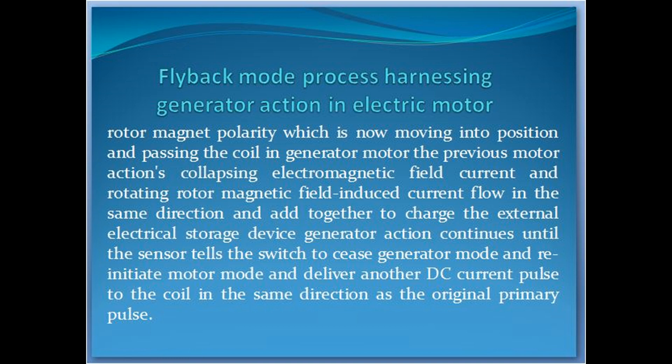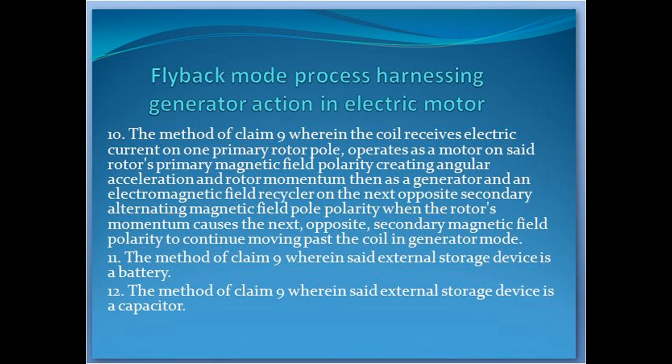Generator mode ceases and motor mode re-initiates, delivering another DC current pulse to the coil in the same direction as the original primary pulse. The method of claim 9 wherein the coil receives electric current on one primary rotor pole, operates as a motor on said rotor's primary magnetic field polarity creating angular acceleration and rotor momentum, then as a generator and an electromagnetic field recycler on the next opposite secondary alternating magnetic field pole polarity, when the rotor's momentum causes the next opposite secondary magnetic field polarity to continue moving past the coil in generator mode.